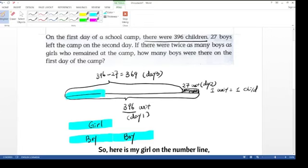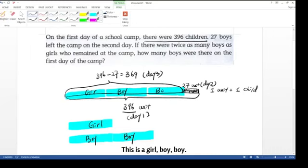So here is my girl on the number line. This is my boy on my number line. So this is a girl, boy, boy.